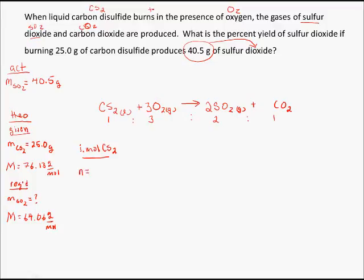The number of moles will equal the mass divided by the molar mass. In this case, that was 25 grams divided by 76.13 grams per mole. And that gives me a total of 0.032839 moles.